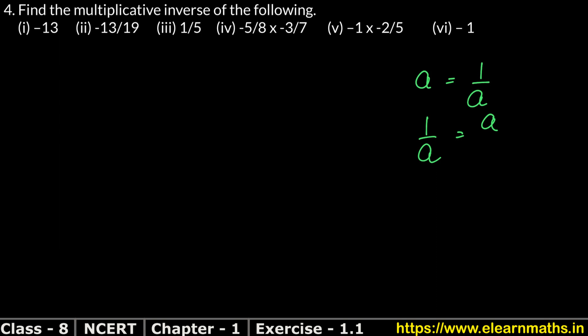Let's do the first part. First part is minus 13. Now where is 13? There is nothing below it, so it is upon 1. The value in the numerator will go to the denominator. So 1 is the numerator and minus 13 is the denominator. This is called multiplicative inverse — opposite, inverse.